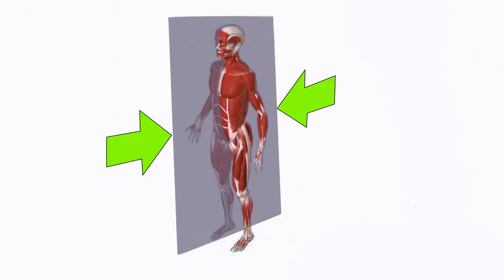So the first plane we're going to be talking about today is the median plane. This plane cuts the body in half from the center vertically. It cuts it into a left and right half.